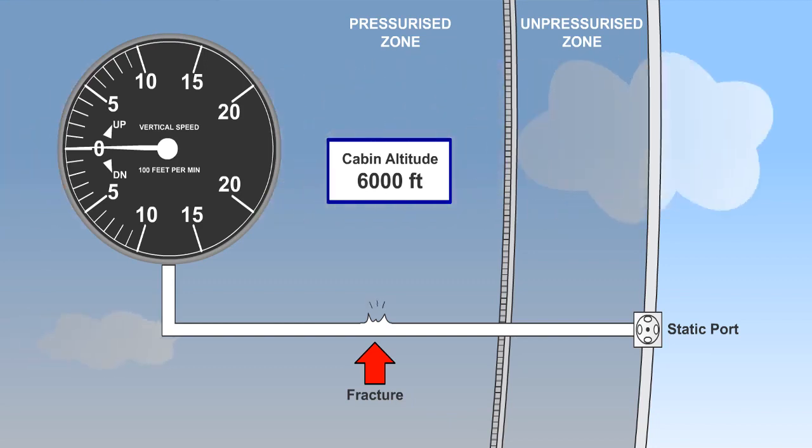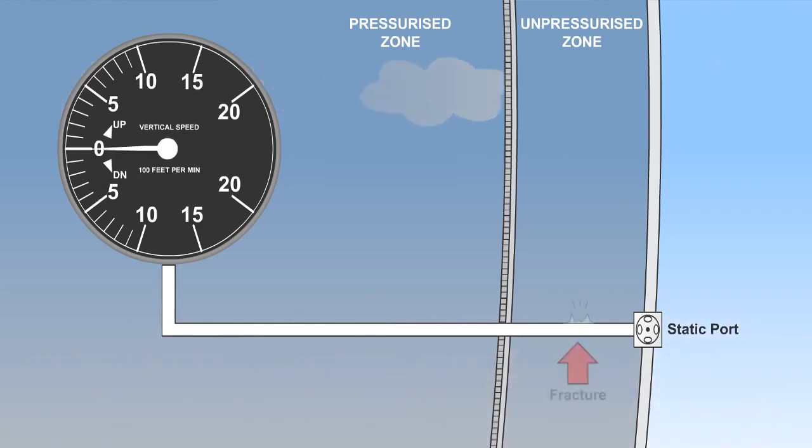If the static line to the VSI should fracture within the pressure hull of a pressurized aircraft, the static pressure sensed will be the cabin altitude pressure, and the VSI will only sense a pressure change when cabin altitude pressure changes. The VSI will continue to function if leakage occurs outside the pressure hull, because differential pressure can still be established in a climb or descent. Pressure fluctuations in the static line may result in transient pressure errors, but the effect will be small.